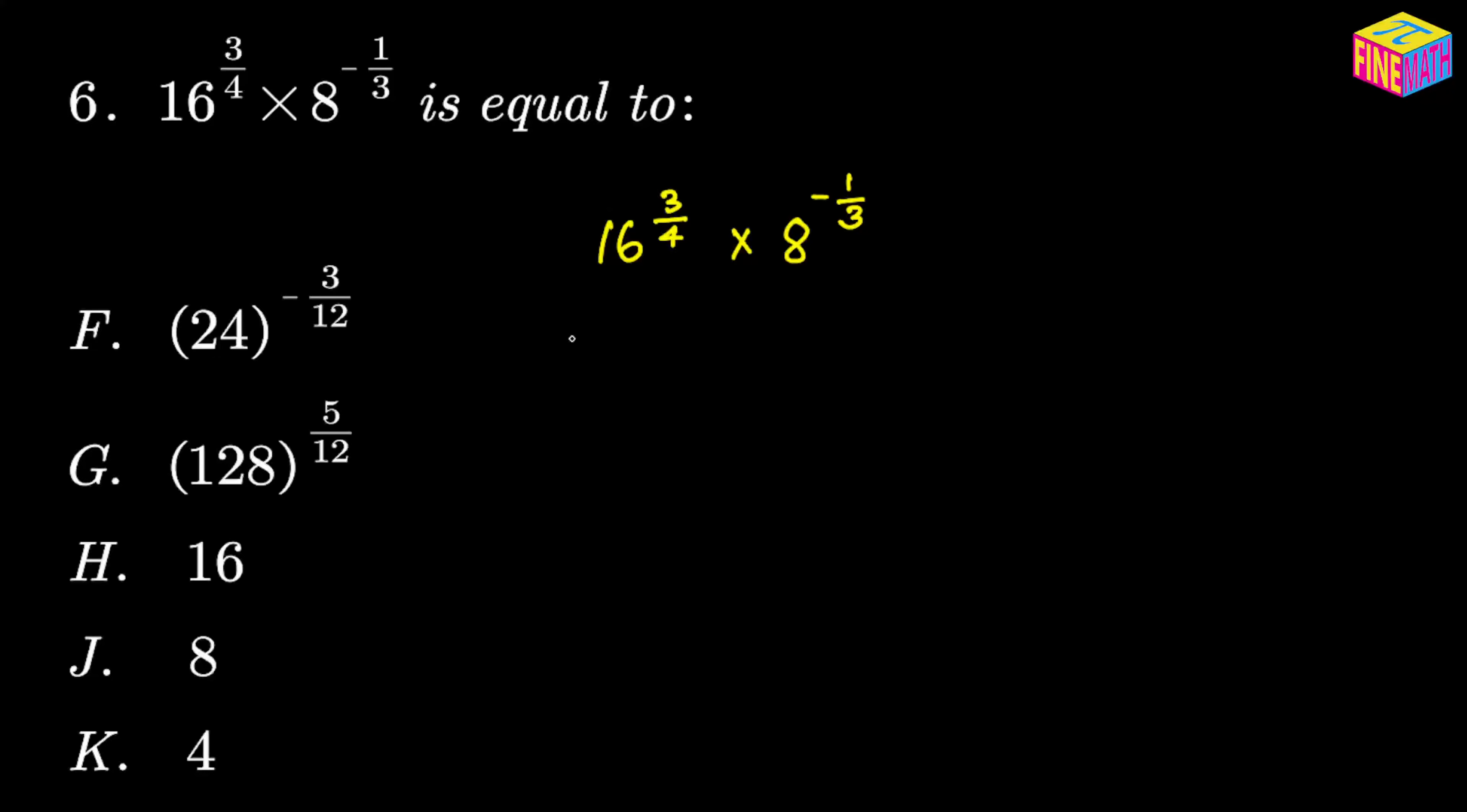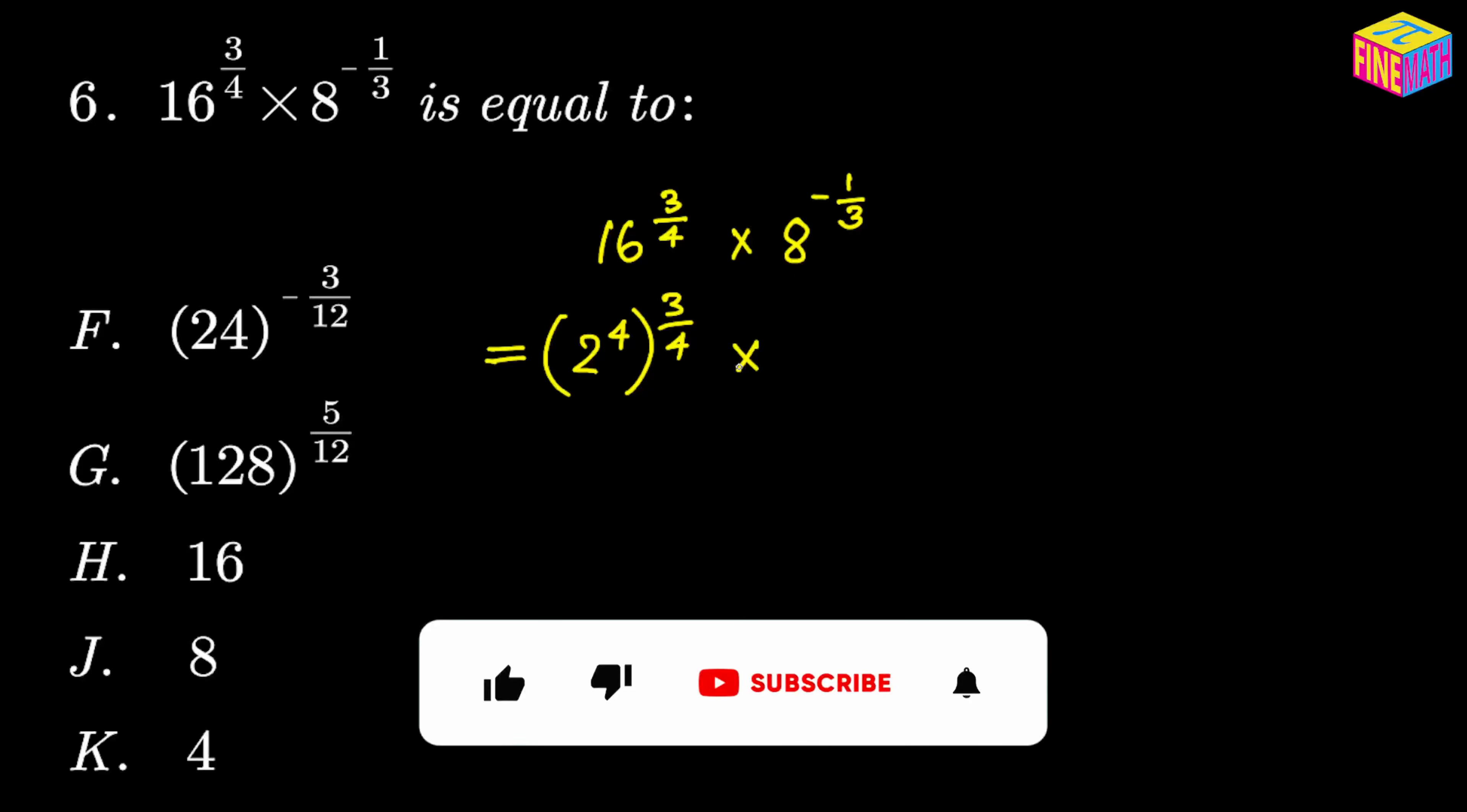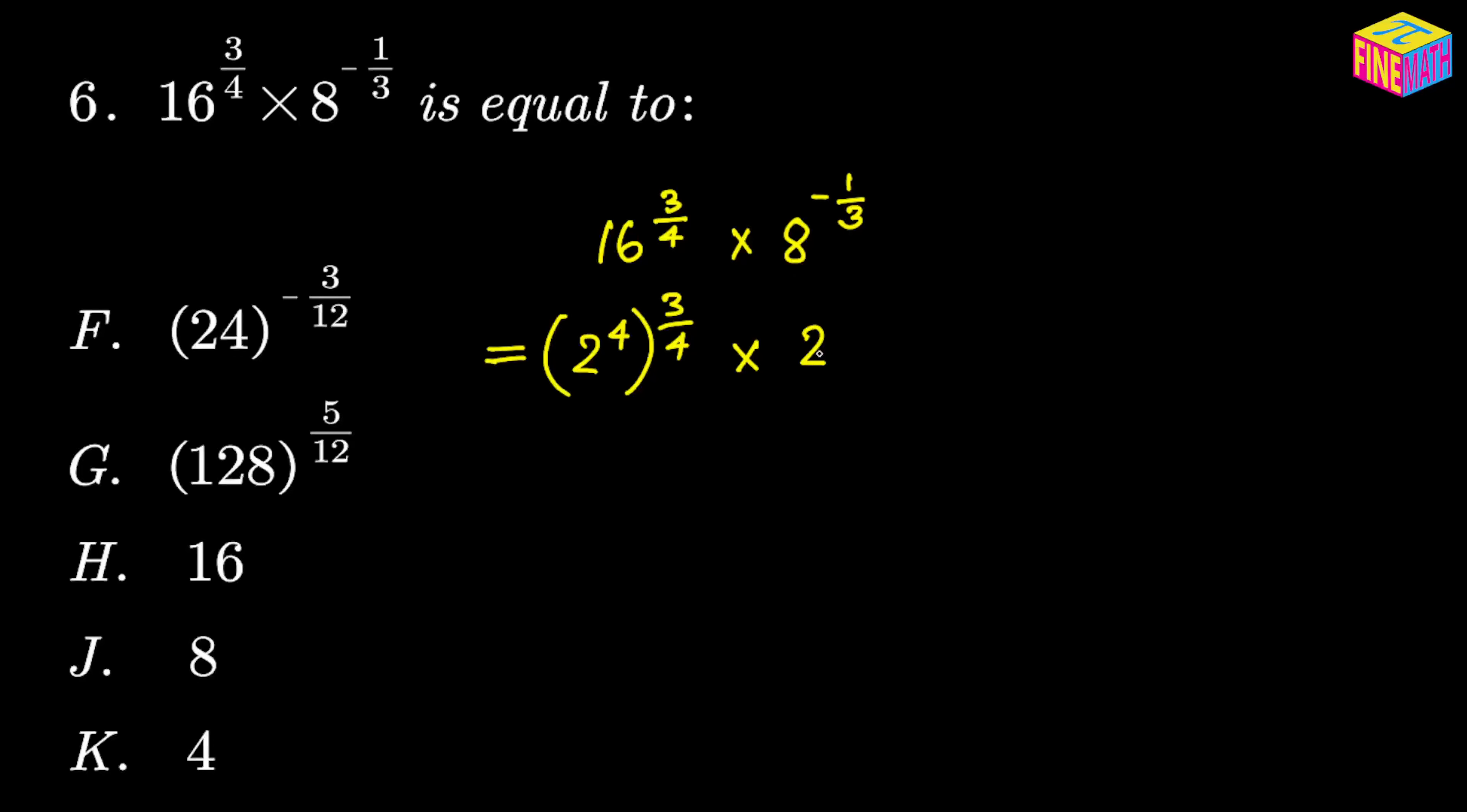16 to the power 3/4 can be written as—16 is actually 2 to the power 4, and then we have a power of 3/4. Then multiplied by—because it is in multiplication form it's pretty easy—8 can be written as 2 cubed, and then we have a power of negative 1/3.